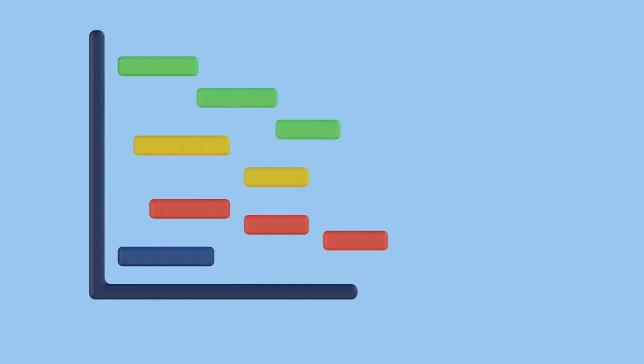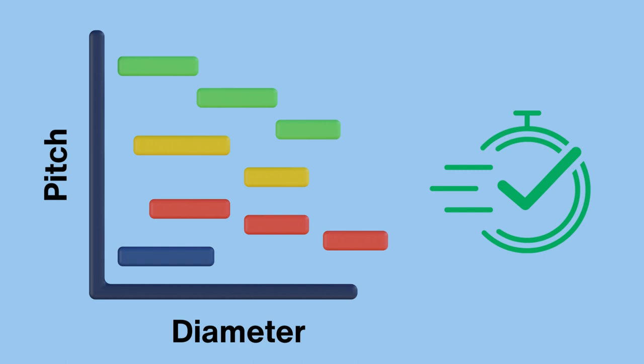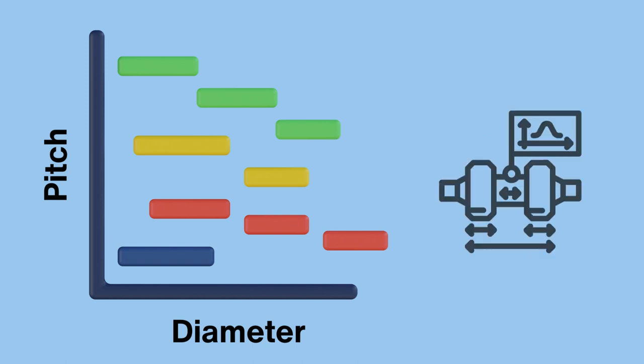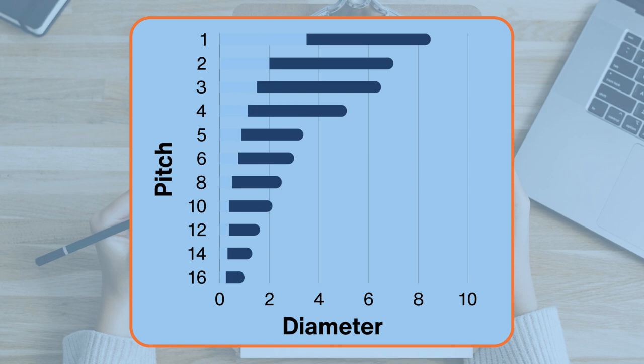Before we wrap it up, one last note regarding diameter pitch combinations. The standard list of ACME threads has only one pitch option per diameter. However, playing with the pitch is an important design consideration since it allows us to increase the traverse speed by using a coarser pitch, or improving the accuracy by choosing a finer one. ASTM B1.5 provides each pitch with the minimum and maximum allowed diameters, as seen in this chart.